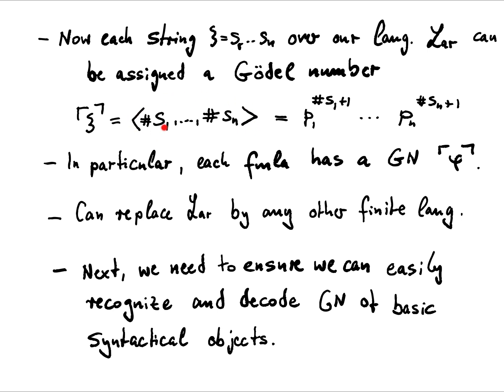But the way to define them is just the same. So we use the codes for each of the symbols, and then we put together the Gödel number using the prime powers as we did before. Of course, you can do this for any string, in particular for strings that don't even represent just some nonsense. But also for each formula, we get a Gödel number. And as I already said, we can replace the language of arithmetic here easily by any other finite language. And then we have to change our symbol encoding scheme accordingly.